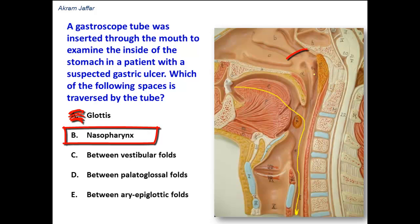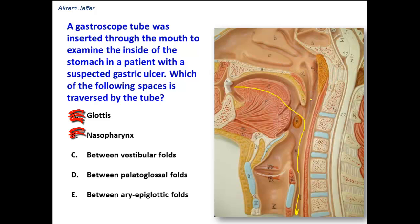The nasopharynx: unless the tube is passed through the nose, it doesn't pass through the nasopharynx. Sometimes tubes do pass through the nose, but here the question states that the gastroscope tube was inserted through the mouth, so there is no way the tube goes up into the nasopharynx in order to reach the stomach.